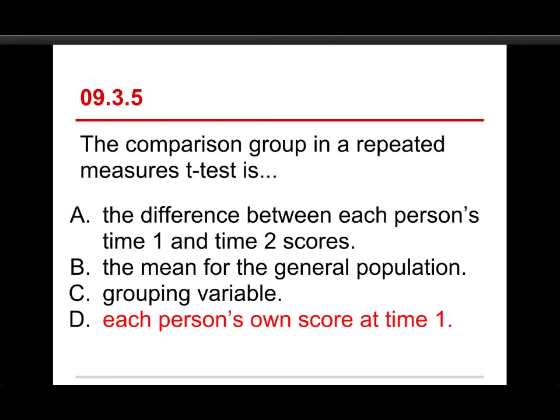Well, the answer in this case is each person's own score at time 1. Now, A may seem like a correct answer, looking at the difference between them. That is what we're analyzing, but that's not the comparison group. The idea here is that each person is serving as their own control.